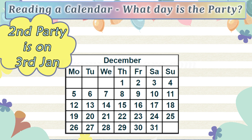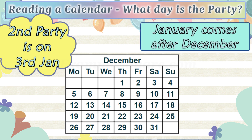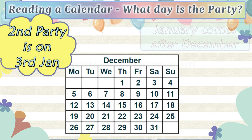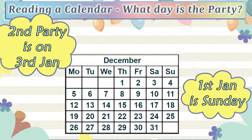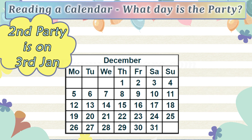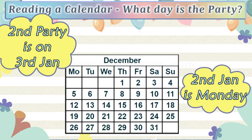The second party is on the 3rd of January in the next year. The calendar given is for December, and January is the month after. The 31st of December corresponds to Saturday, which means the 1st of January is Sunday, the 2nd of January is Monday, and therefore the 3rd of January is Tuesday.